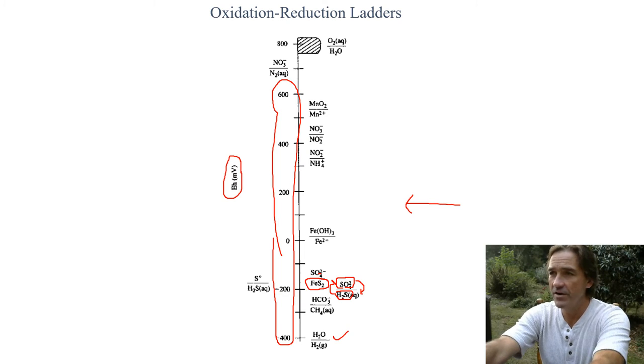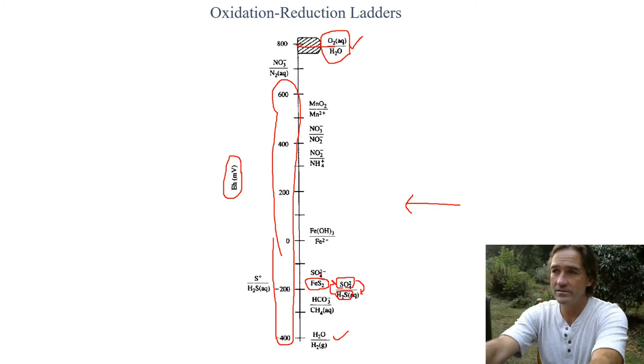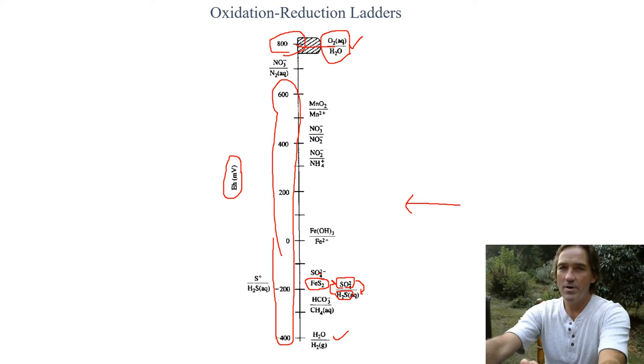We see at the very top here, oxygen water. This is where its couple and potential lies and it creates an EH when water is saturated with oxygen. You create an EH that is about 800 millivolts.